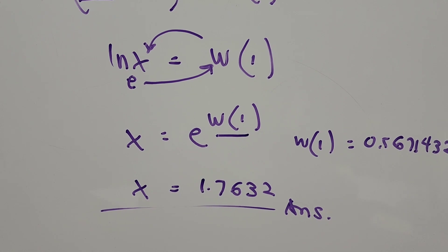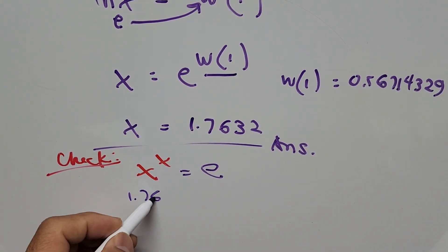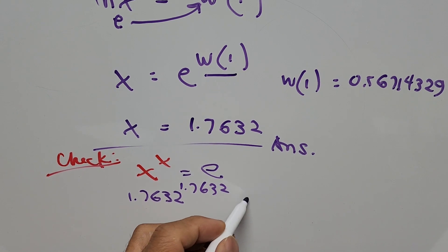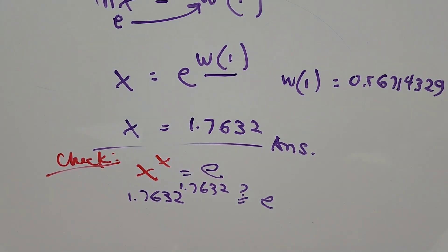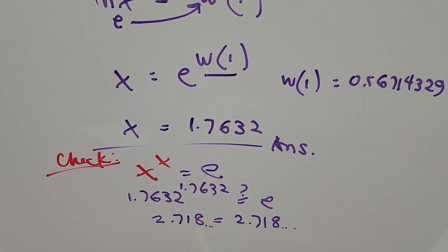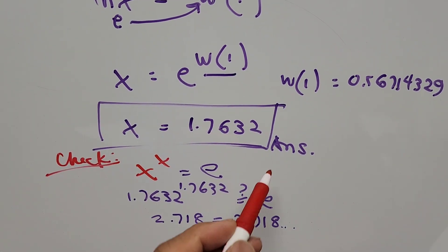We need to verify our answer. Going back to the original equation x to the power of x equals e, we substitute x equals 1.7632: 1.7632 to the power of 1.7632. The left-hand side evaluates to approximately 2.718, and the value of e is also approximately 2.718 — this is an approximation, of course. This confirms that x equals 1.7632 is indeed our correct final answer.